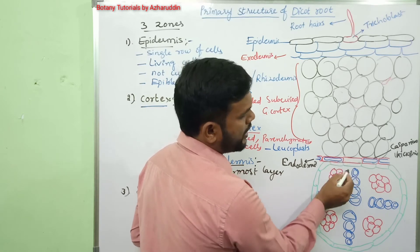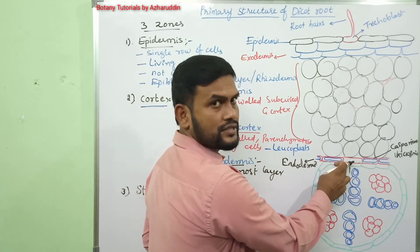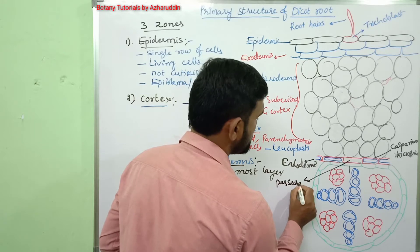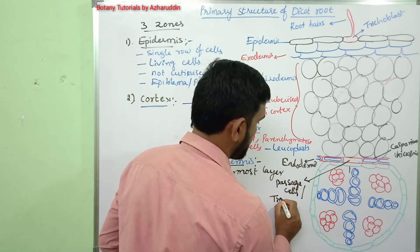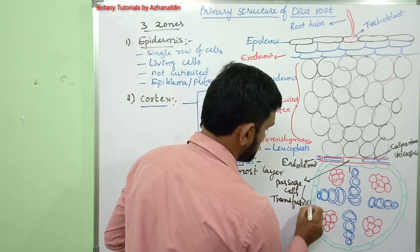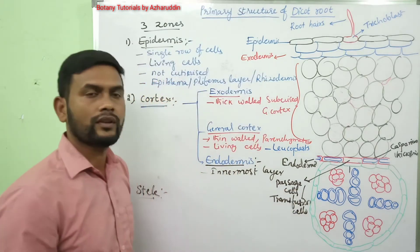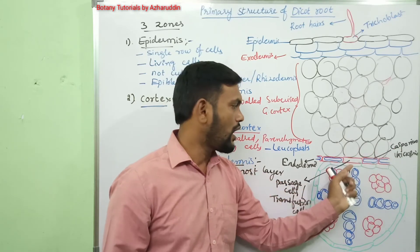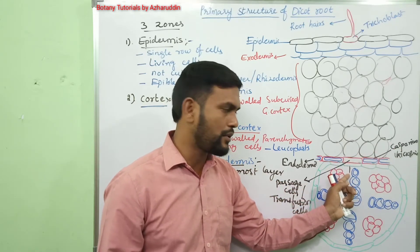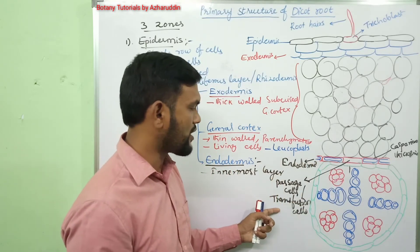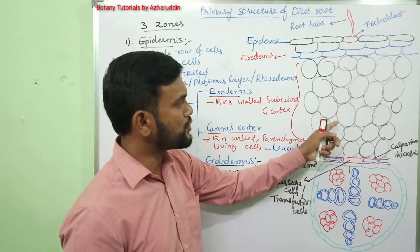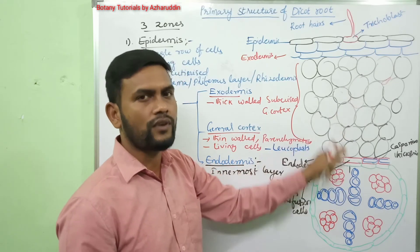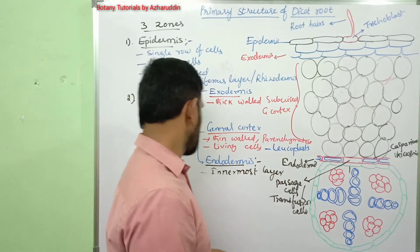Some of the endodermal cells do not have Casparian thickenings — these are the cells opposite to the protoxylem elements in the stele. Such cells are called passage cells or transfusion cells. They are useful in the transportation of water from the cortex to the protoxylem elements, and are involved in the conduction of water.